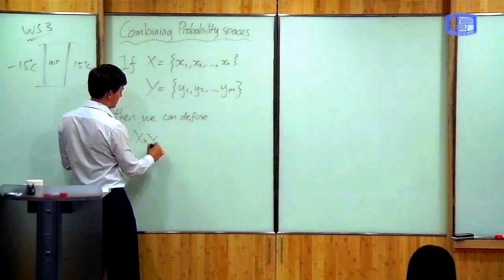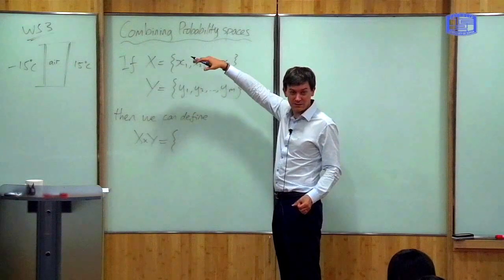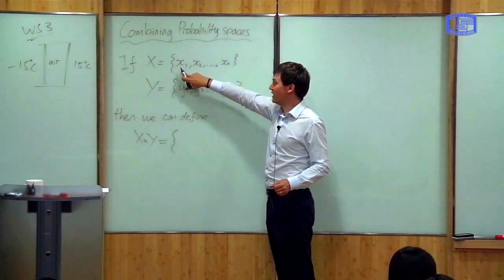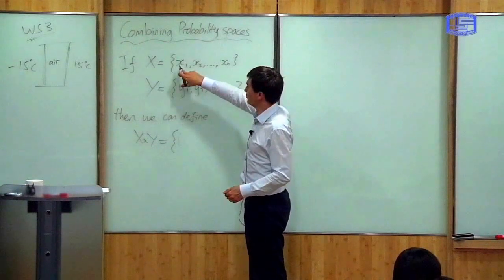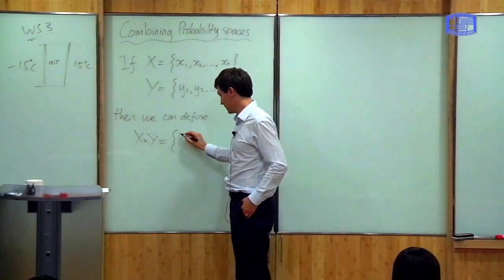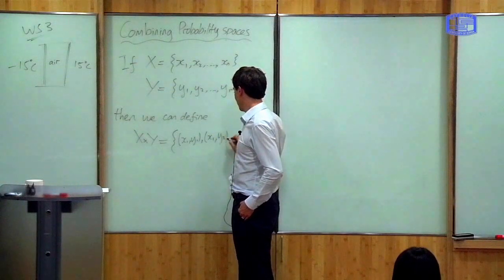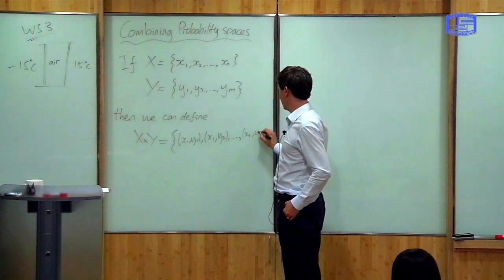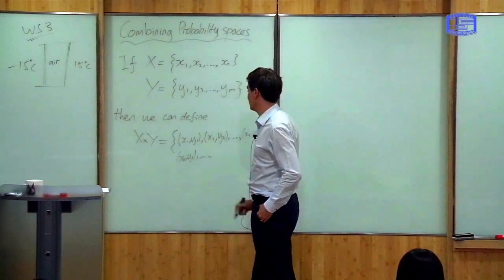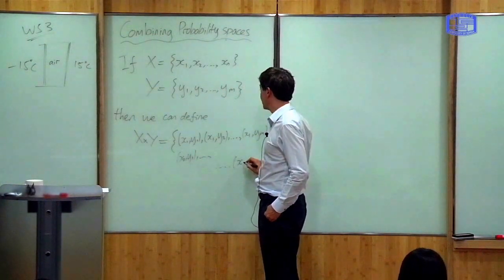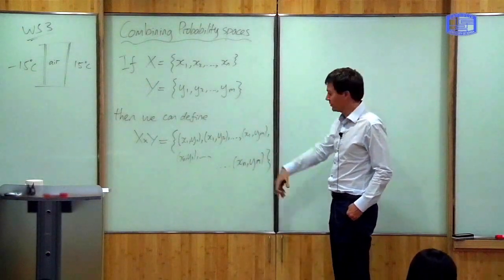We define a new set called X cross Y, which is the set of all possible combinations of events. For example, X can be a dice, in which case this is 1, 2, 3, 4, 5, 6. The combination would be the probability that the first dice equals 1 and the second dice equals 2, or whatever. So you can have X1 and Y1, X1 and Y2, all the way up to X1 and Ym, or X2 and Y1, up to Xn and Yn. X cross Y is the set of all possible combinations of events.